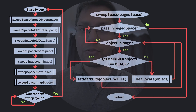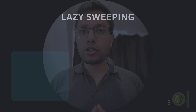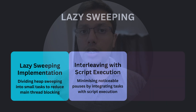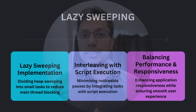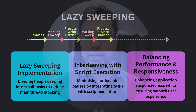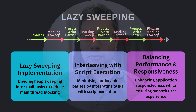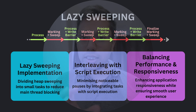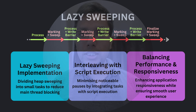After all the spaces are swept, we resume the main process and wait for the next sweep cycle. Instead of sweeping the entire heap all at once — which can cause noticeable pauses in the main application — V8 performs lazy sweeping. This means that the heap is swept in smaller pieces over time. The sweeping process is divided into smaller tasks that are performed in between the main script execution.